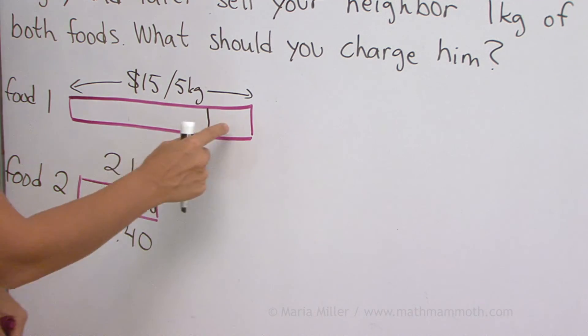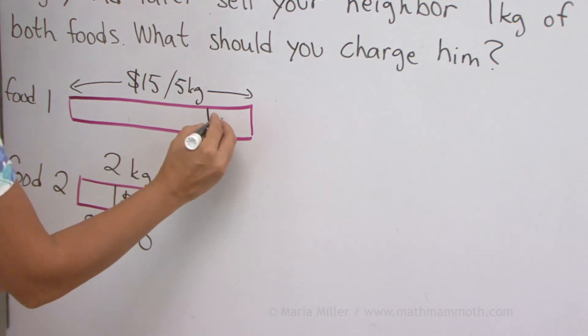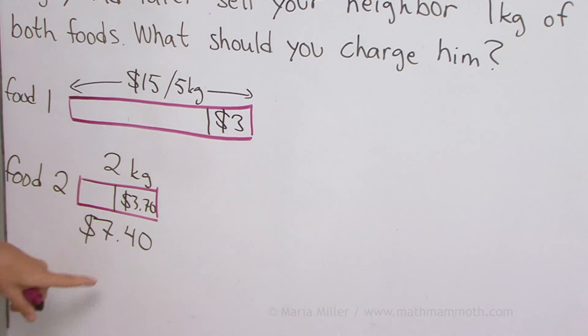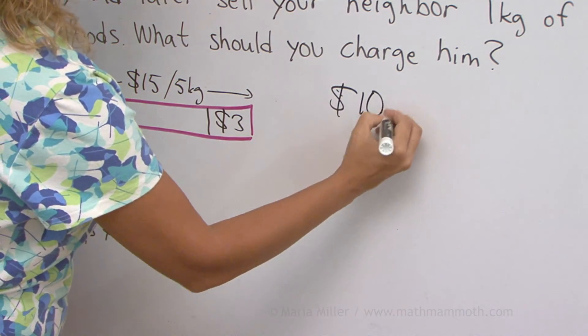And then over here, how much would one kilogram cost? That's easy, isn't it? $15 divided by five would make it $3. And now we just add those two numbers. $3 and $3.70, we get $6.70.